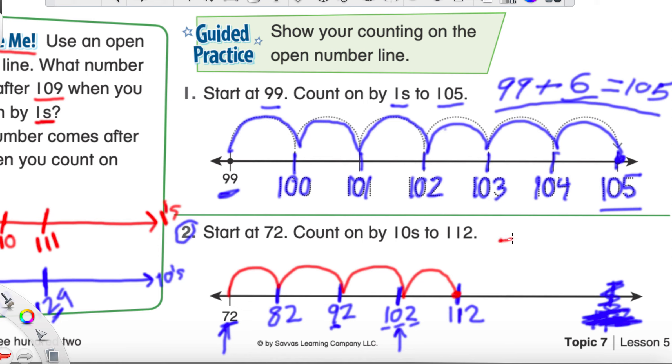So, if we had 72 plus some crazy number equals 112. Well, you can count the jumps by tens, right? So, we have 10, 20, 30, and 40. So, 72 plus 40 will give us 112. How cool is that? So, this number line will help us out a lot later on in the school year.